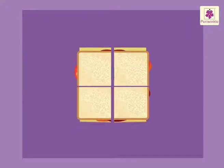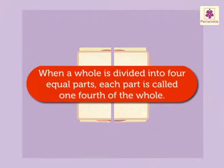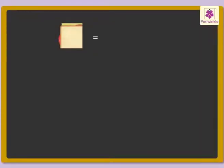Thus, we say that when a whole is divided into four equal parts, each part is called One-Fourth of the whole. It is written as one upon four. It is read as One-Fourth. One-Fourth is also called Quarter.